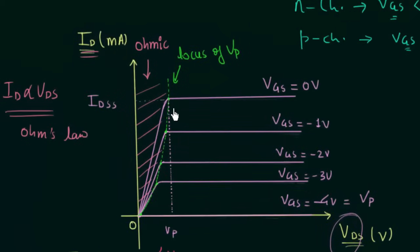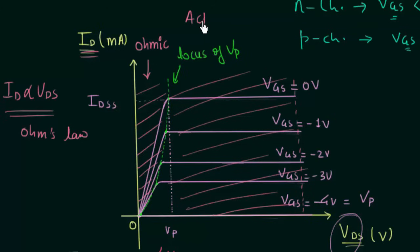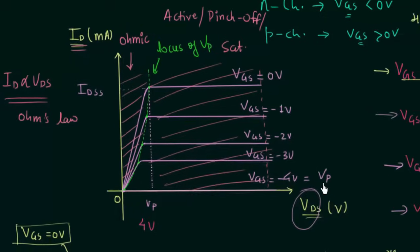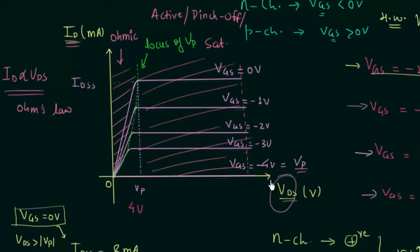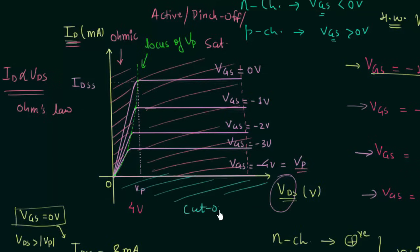The region starting from the point where ID becomes constant is called the saturation region, also known as the pinch-off region or the active region. The region where VGS equals the pinch-off voltage VP and ID equals 0A is called the cutoff region. The value of VGS required to make ID equal to 0A is called the gate cutoff voltage, and at this point the device has been turned off for all practical purposes.